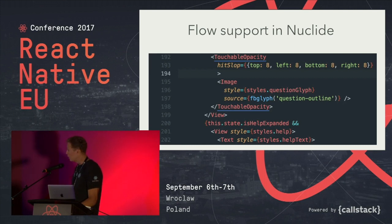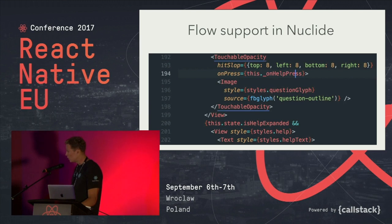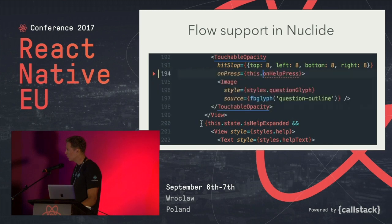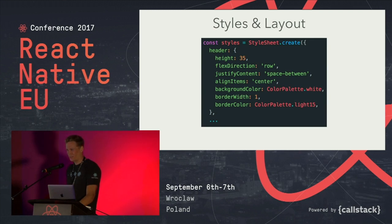Another thing I discovered when building this was Flow support in Nuclide. When you type, you get code completion and if you make typos you get underline errors. If you hover over something it tells you it's a boolean, for example. It's almost like writing Java but without waiting for compilation.